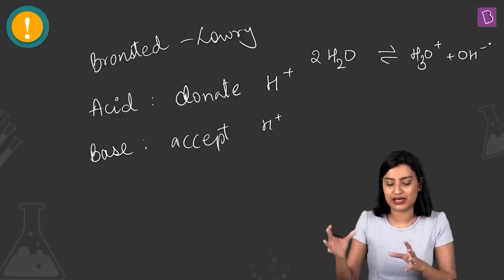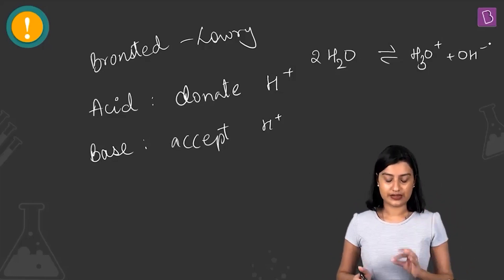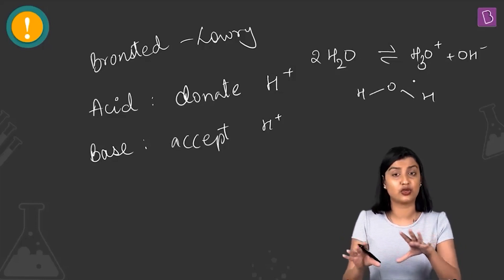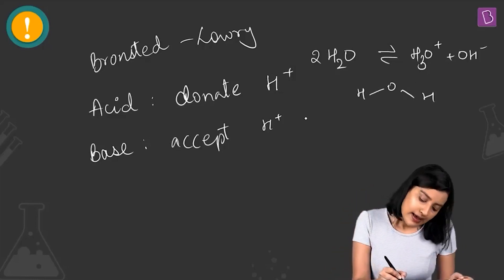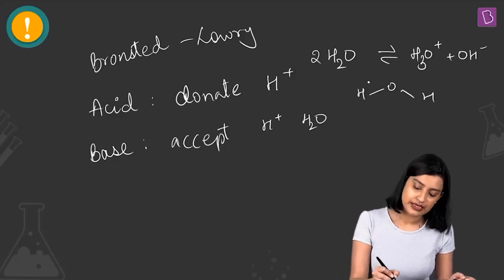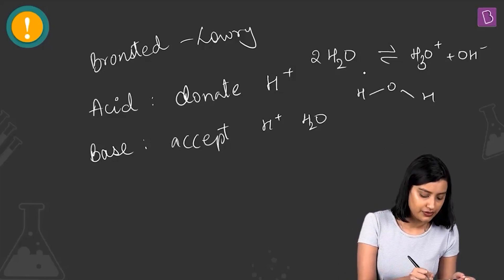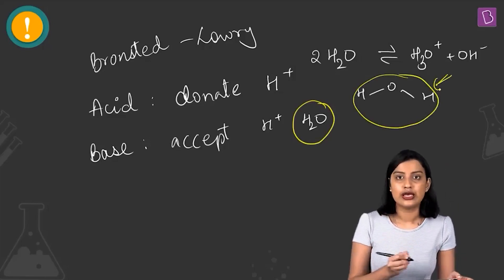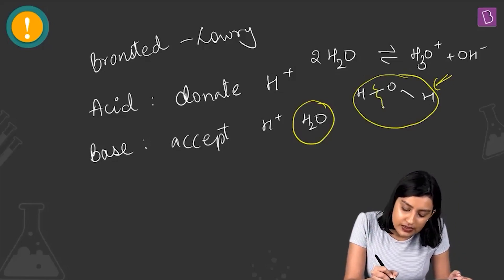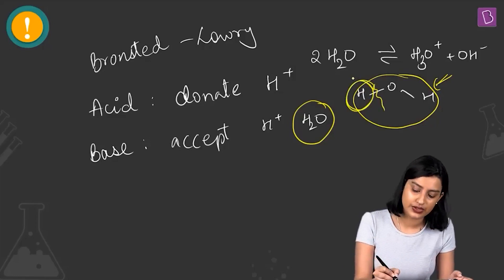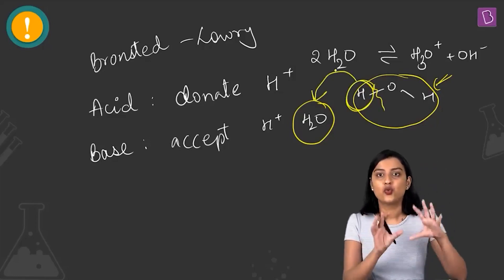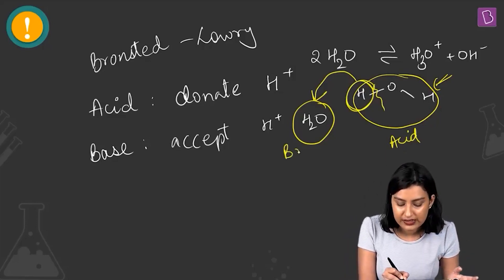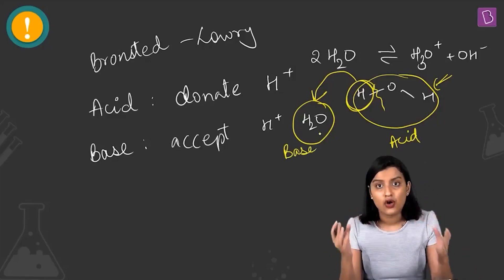In this autoprotolysis equilibrium, one water molecule donates a proton — behaving as an acid — while the other water molecule accepts that proton, behaving as a base. This demonstrates that water can act as both a Bronsted acid and a Bronsted base simultaneously.